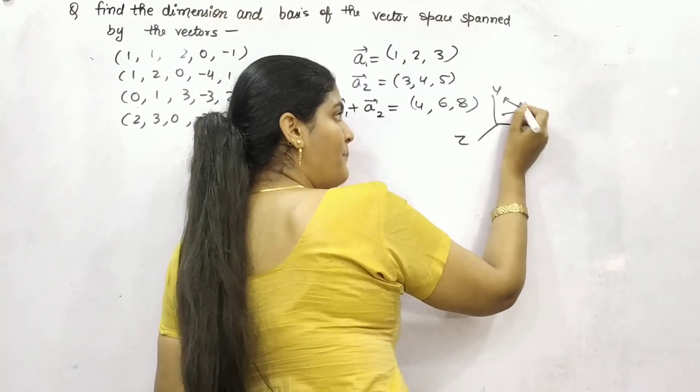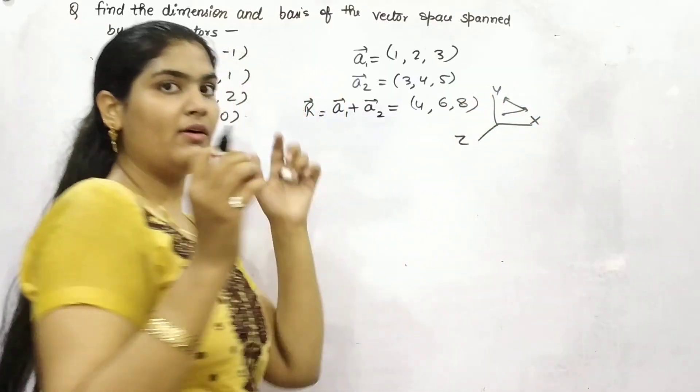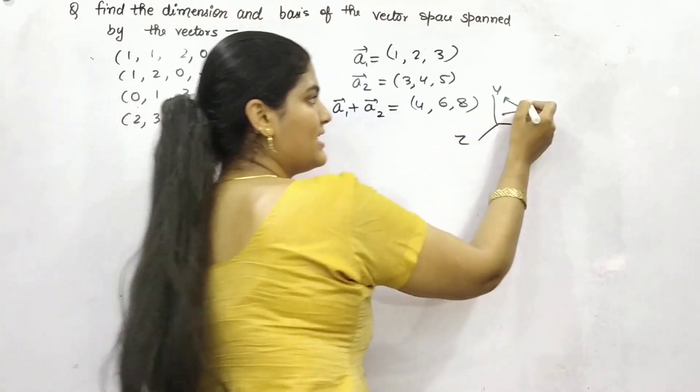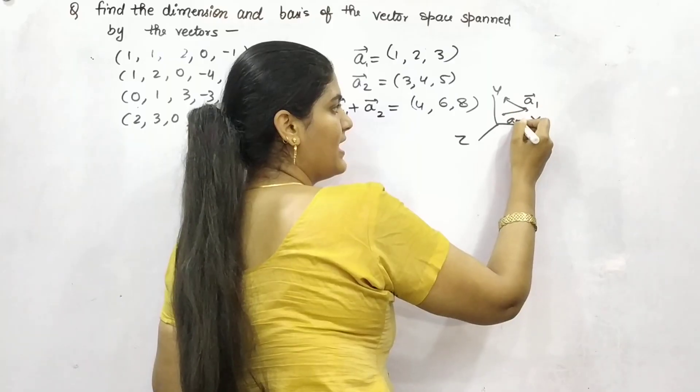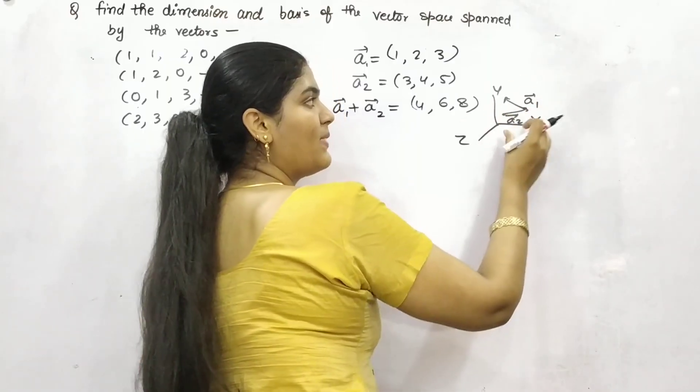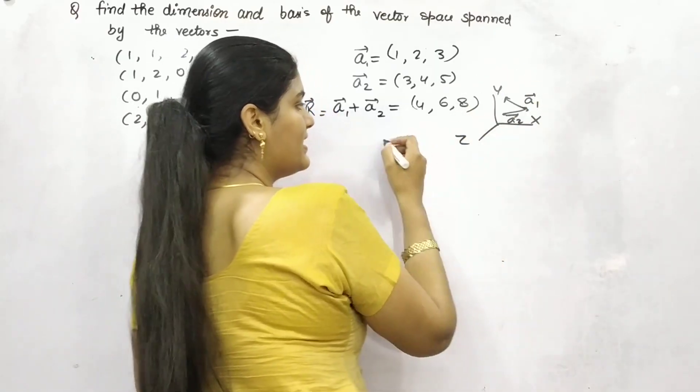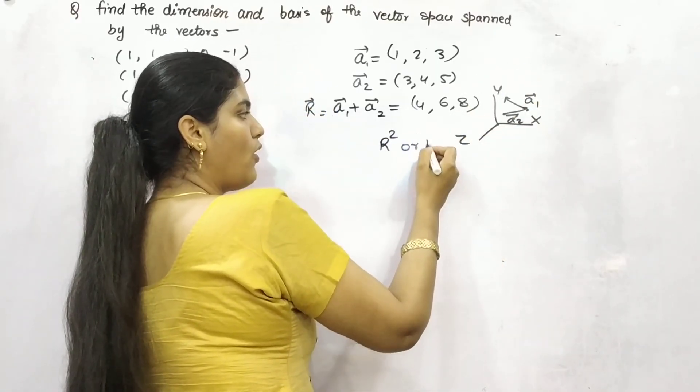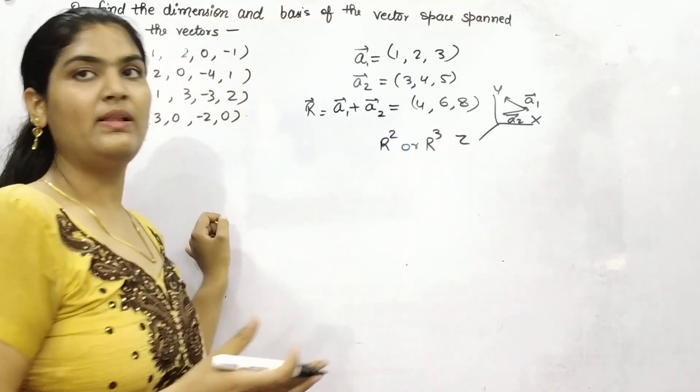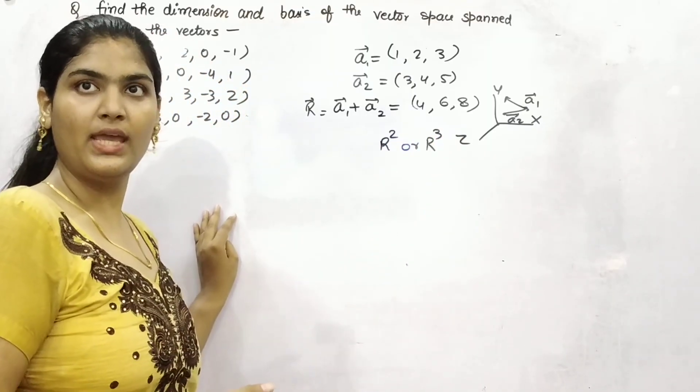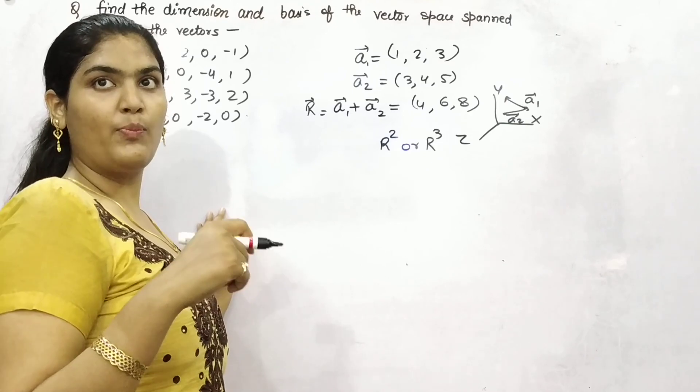So the base, which is a1 and this is a2, base will determine the origin of these vectors. Whereas these span, whether it is 2D or 3 dimensional, it will be its dimension. So let's begin with an example, how we can find out a base and dimension of a vector.